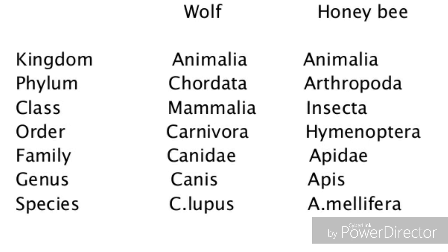Based on hierarchical classification, here you can see two examples from the animal kingdom. The first one is wolf, a mammal. Honey bee is an insect; it is an invertebrate and belongs to phylum Arthropoda.